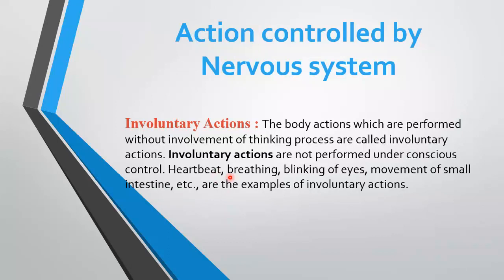Involuntary action کی common examples میں heartbeat ہے — ہمارا heart مسلسل دھڑکتا ہے اور blood کی circulation کرتا ہے، ہم اسے اپنی مرضی سے روک نہیں سکتے۔ اسی طرح breathing ہے — ہم چاہیں تو تھوڑی دیر کے لیے روک سکتے ہیں مگر ایک حد تک۔ Blinking of eye اور small intestine کی movement بھی involuntary actions کی examples ہیں، جیسا کہ آپ نے class 7 میں پڑھا تھا۔